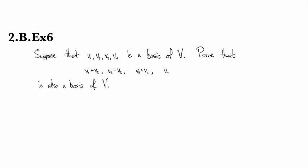Alright, suppose that we've got a basis of V consisting of these four vectors, V1 through V4. Prove that these linear combinations V1 plus V2, and V2 plus V3, and V3 plus V4, and V4 itself, those guys also form a basis of V.